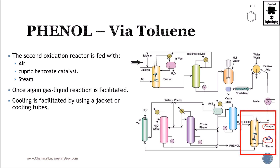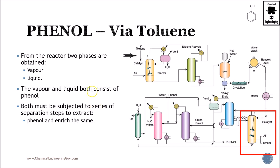We add further oxidation material from air and we add steam. Once again, this is a liquid-gas reaction: the benzoic acid is in liquid phase and air and steam are in vapor phase. We obtain two products — liquid and gas — and actually both contain phenol, so it's kind of tricky because we have to ensure that we obtain most of the phenol from both streams.